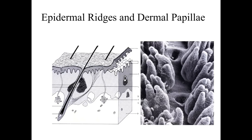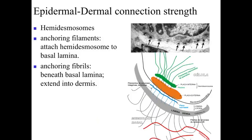This interdigitation provides strength so that we're not shifting the epidermis in relationship to the dermis, which would damage it and interfere with diffusion by causing scar tissue. If we had a flat dermis and flat epidermis sitting on top of it, there wouldn't be a lot of structure anchoring them together. These dermal papillae and epidermal ridges are important for forming a good, stable connection between our epidermis and dermis.